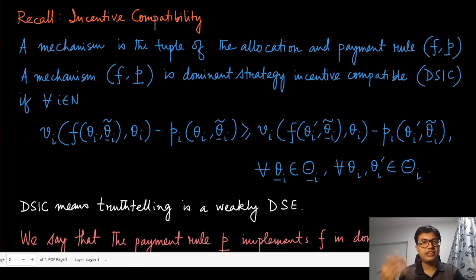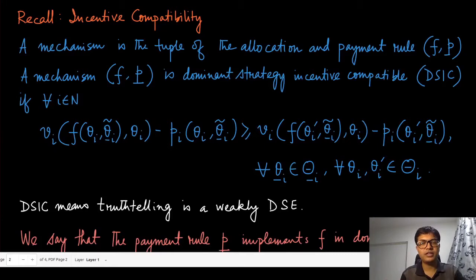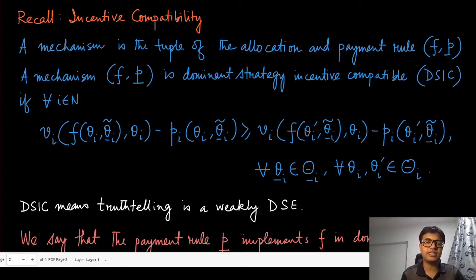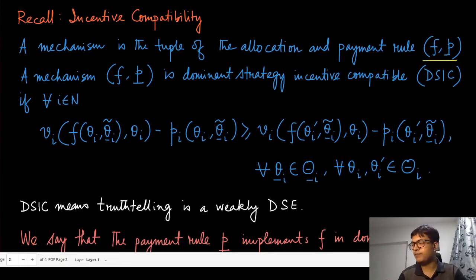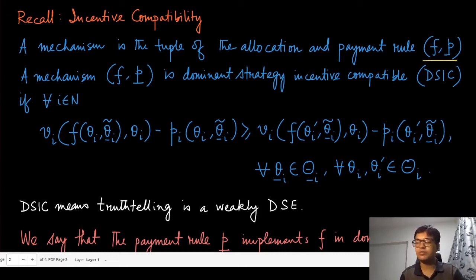Let us recall the definition of incentive compatibility defined earlier in the mechanism design section. We reiterate this definition in the context of quasi-linear preferences and mechanisms with transfers. The mechanism is a tuple (f, p) — an allocation rule and a payment rule — and we call this mechanism dominant strategy incentive compatible (DSIC). Previously we wrote the conditions in terms of utilities; now we write them explicitly in terms of valuation and payment.